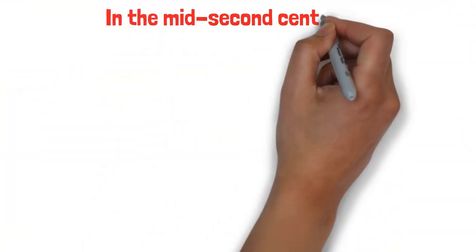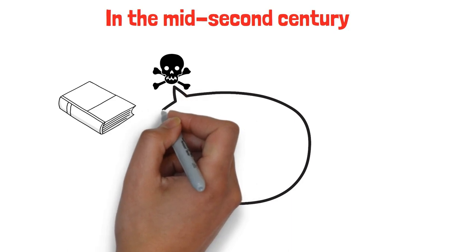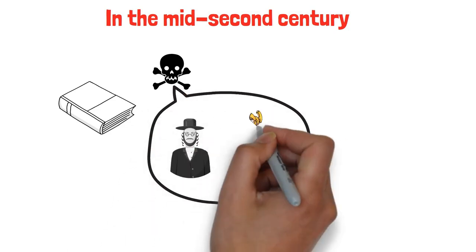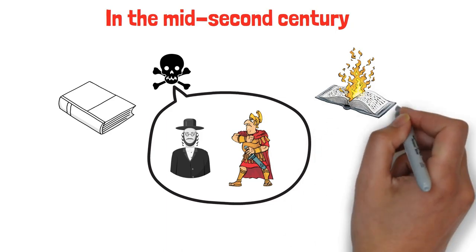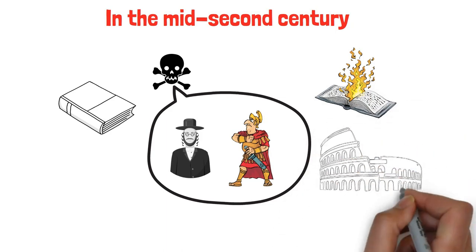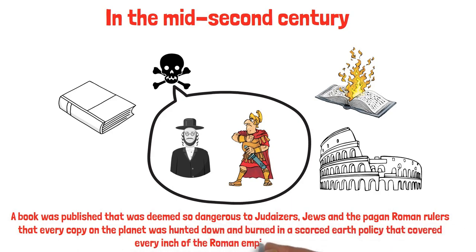In the mid-2nd century, a book was published that was deemed so dangerous to Judaizers, Jews and the pagan Roman rulers, that every copy on the planet was hunted down and burned in a scorched-earth policy that covered every inch of the Roman Empire and beyond.